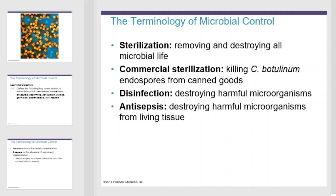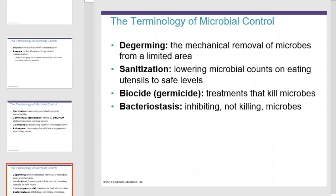Disinfection destroys harmful microorganisms. Antisepsis destroys harmful microorganisms from living tissue. Degerming is the mechanical removal of microbes from a limited area, while sanitization lowers the microbial counts on eating utensils to safe levels. Biocides, or germicides, are the chemicals used to treat and kill microbes, while bacteriostasis is not about killing but instead inhibiting microbial growth.